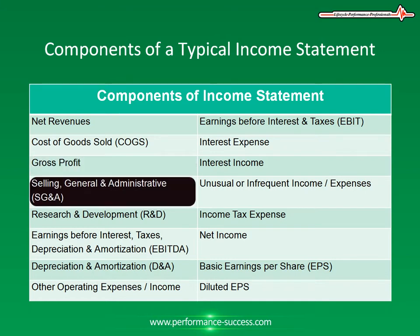Selling, General and Administrative, or SG&A. These are operating costs not directly associated with the production or procurement of the product or service that the company sells to generate revenue. Payroll, wages, commissions, meal and travel expenses, stationary advertising, and marketing expenses fall under this line item.